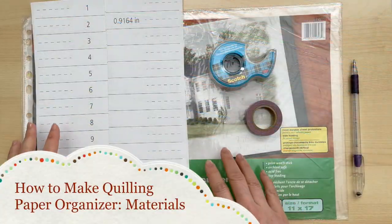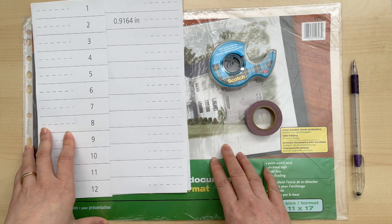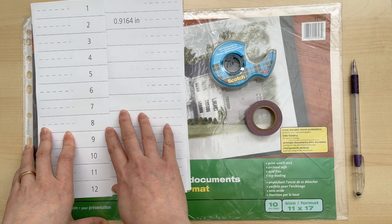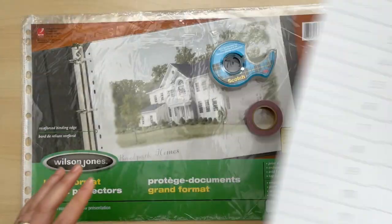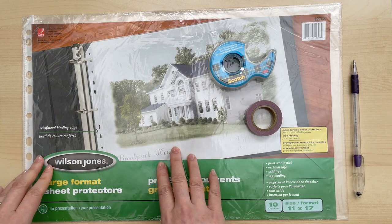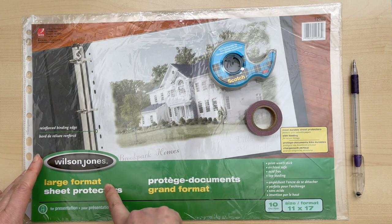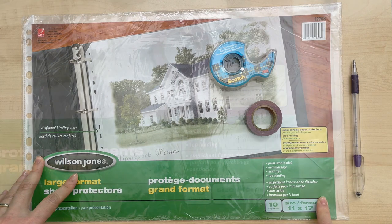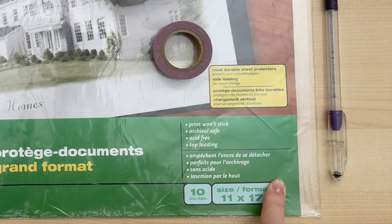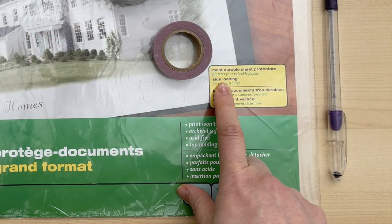Here are the materials that you'll need to make this quilling paper strip organizer. Download my free PDF template. You'll also need some sheet protectors, this is large format or 11 by 17. Now just note that there are two versions, there's a side loading and top loading.